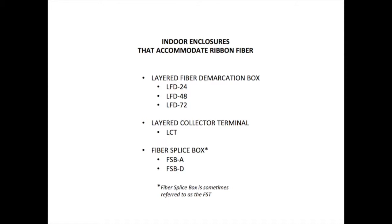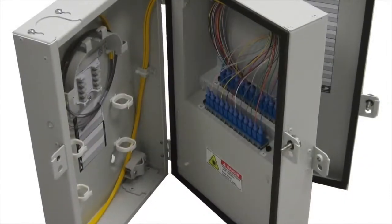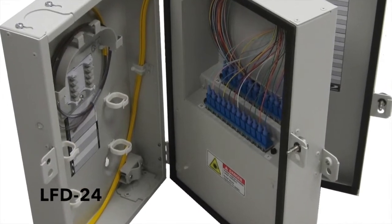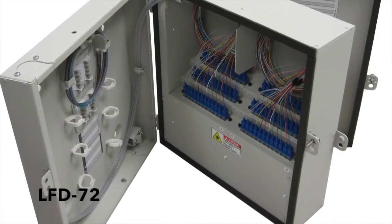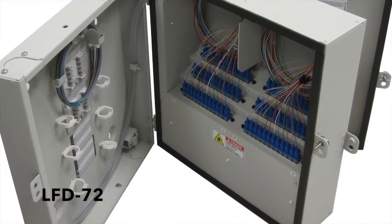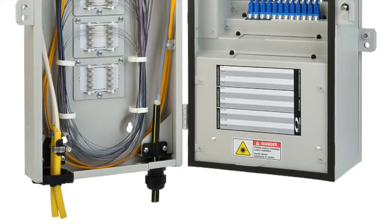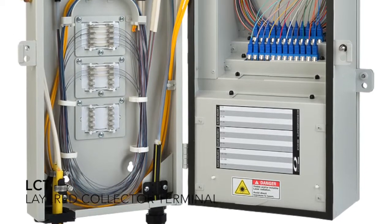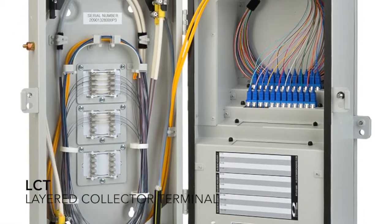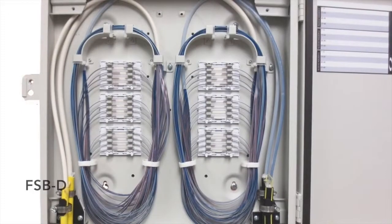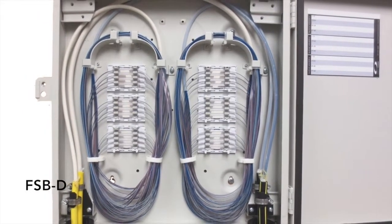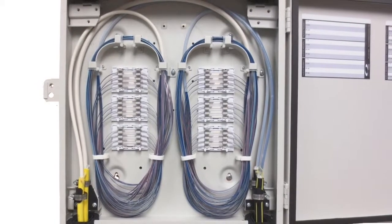This is our LFD product line, or commonly called FIDB. We have a 24, 48, and 72 versions. These are SC UPC, another version we have SC APC, same sizes. We also have a collector version for a different application with more cables coming in, but the same basic layout with our ribbons. And we also have fiber splice boxes, or sometimes called FSTs.